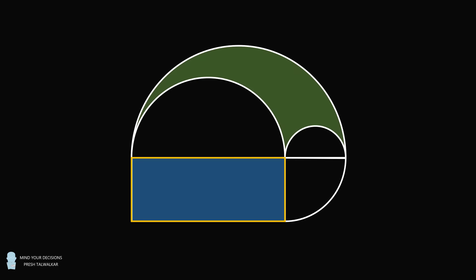We have a rectangle. Next to the rectangle is a quarter circle, next to that is a semicircle, we then have another semicircle, and then we have a larger semicircle. If the area of the rectangle is 4 square centimeters, what is the area of this shaded region between the large semicircle and these two smaller semicircles?